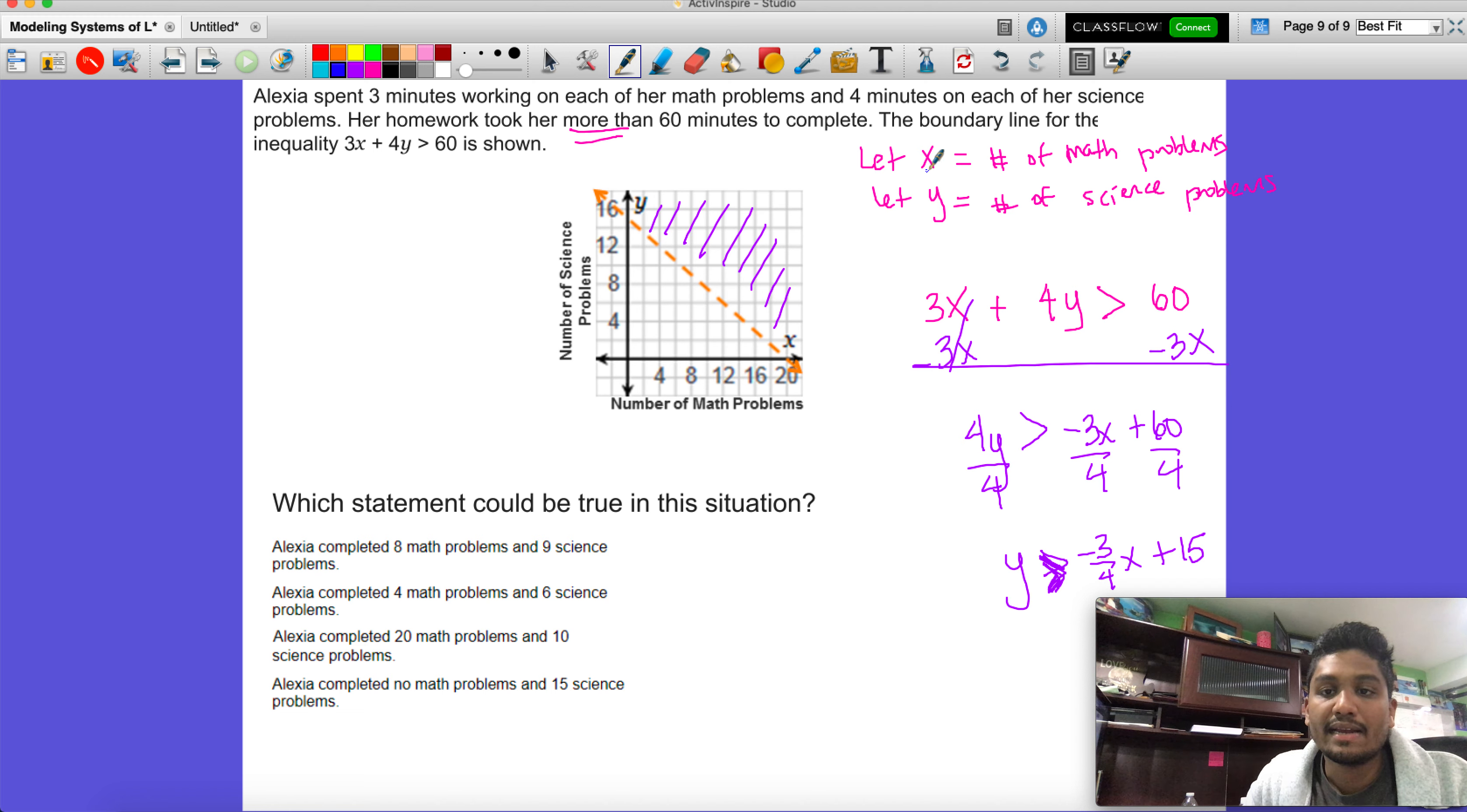Remember x is math problems, y is science. So when we create a coordinate, what we're really saying is math comma science. When we say Alexa completed eight math problems - math was x - comma nine science, we're saying does this coordinate eight comma nine work.